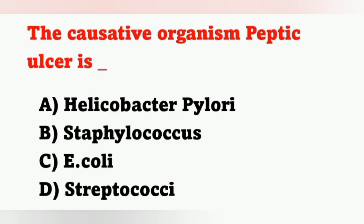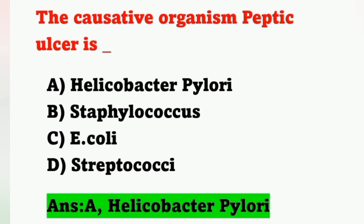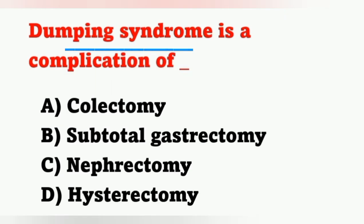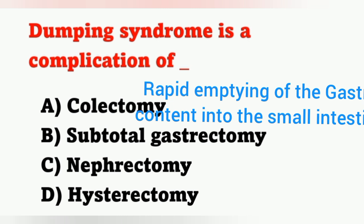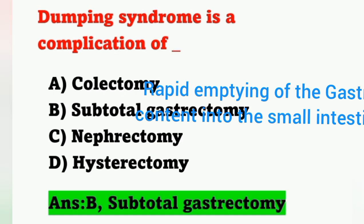The causative organism of peptic ulcers is — option A: Helicobacter pylori, option B: Staphylococcus, option C: E. coli, option D: Streptococcus. The causative organism is Helicobacter pylori — option A is correct. Next question: dumping syndrome is a complication of — option A: colectomy, option B: subtotal gastrectomy, option C: nephrectomy, option D: hysterectomy. Dumping syndrome is the rapid emptying of gastric content into the small intestine, mainly occurring after gastric resection or surgery. Option B, subtotal gastrectomy, is the correct answer.